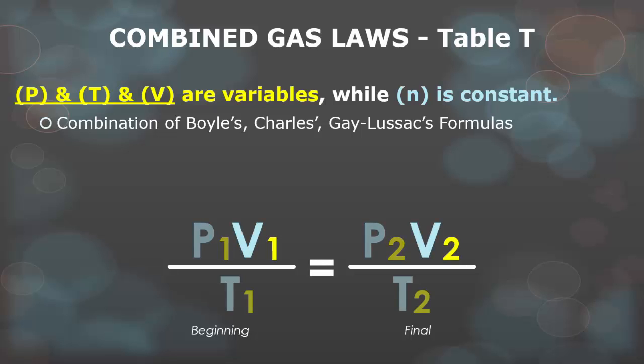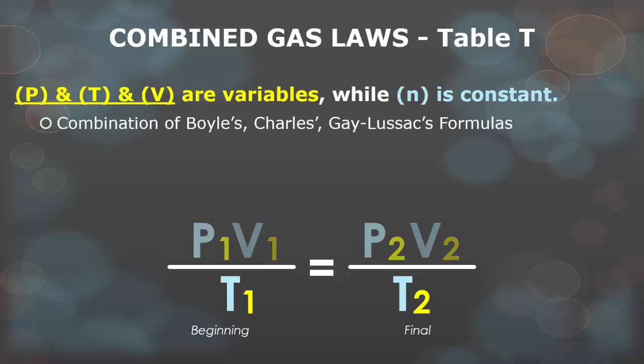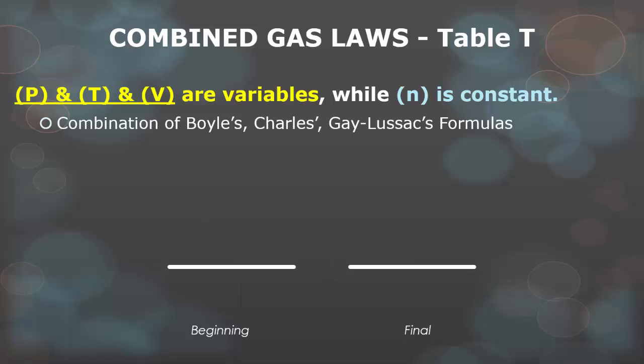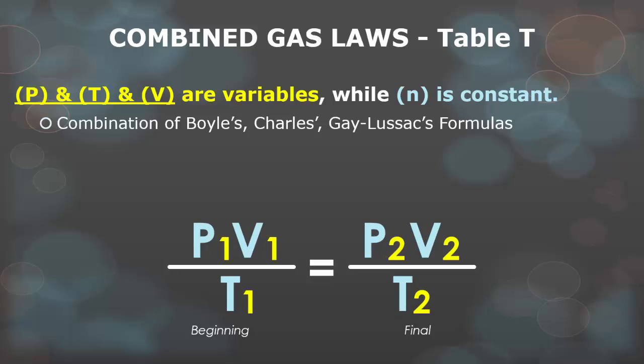Charles' law, which is V1 over T1 is equal to V2 over T2, and Gay-Lussac's law, which is P1 over T1 is equal to P2 over T2. If you put them all together, you get this lovely formula: P1V1 divided by T1 is equal to P2V2 divided by T2.